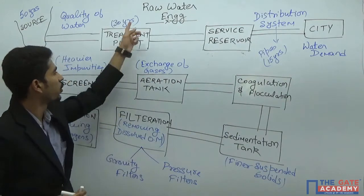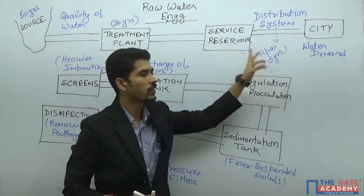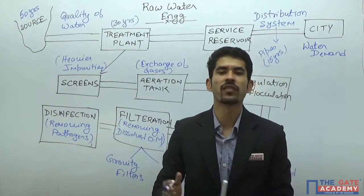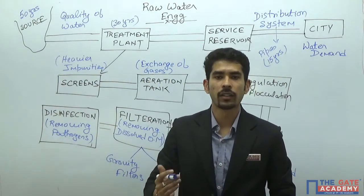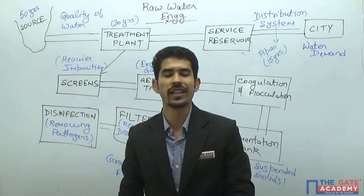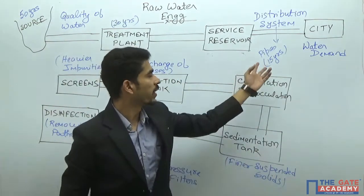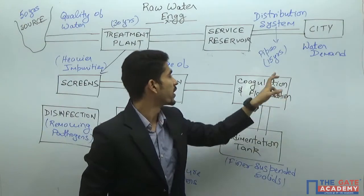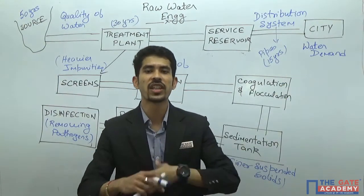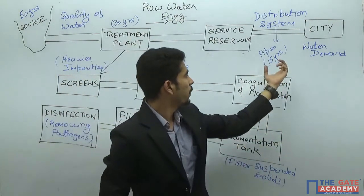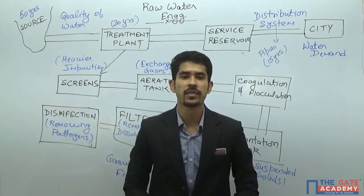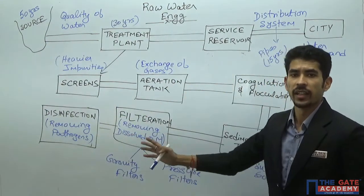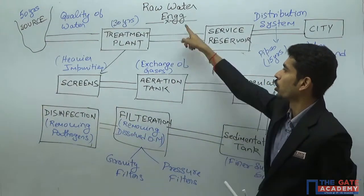The treatment plant is designed for 30 years, but the pipes are designed for only 15 years. The reason is that we have been following conventional treatment for a very long time — the technological advancement in case of the treatment plant is less than that for pipes. Since technological advancement in case of pipes is greater, we design them for only 15 years so that we can update or change our process. That is why pipes are designed for 15 years and the treatment plant for 30 years.